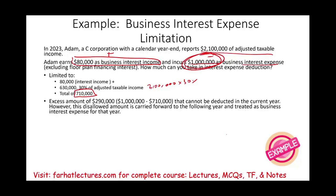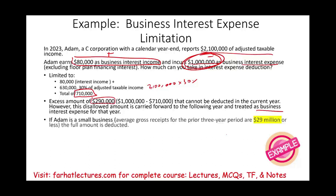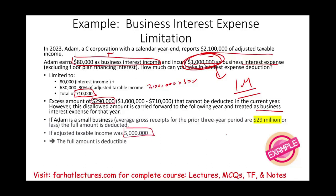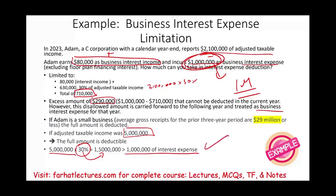Adam paid $1 million in interest expense but is limited to $710,000, so $290,000 is disallowed this year but can be carried forward to future years as a business interest expense. If Adam qualifies as a small business, the full $1 million is deductible. As an alternate scenario, if Adam's adjusted taxable income were $5 million instead: 30% × $5 million = $1.5 million, which exceeds the $1 million interest expense, so the full amount is deductible.